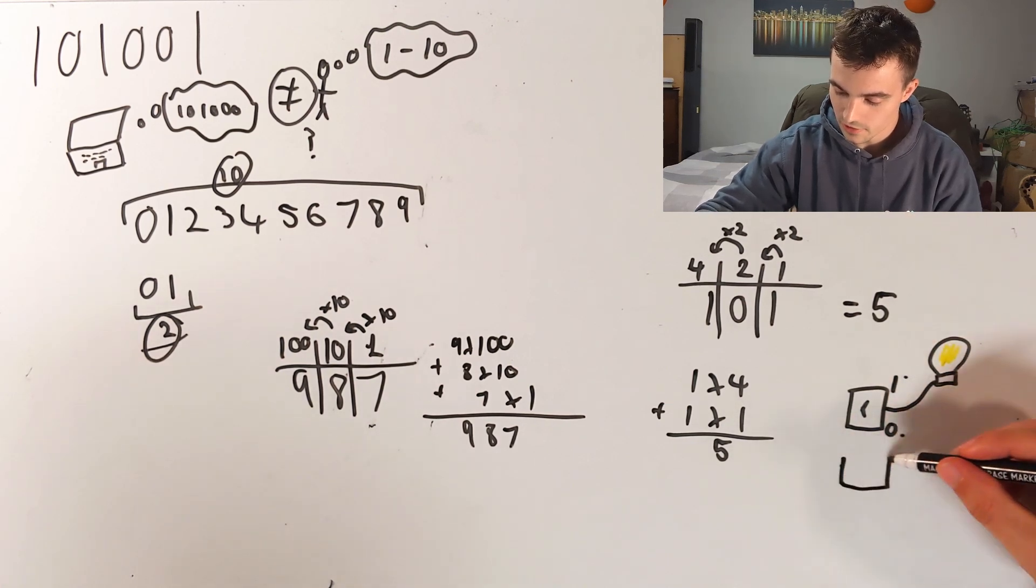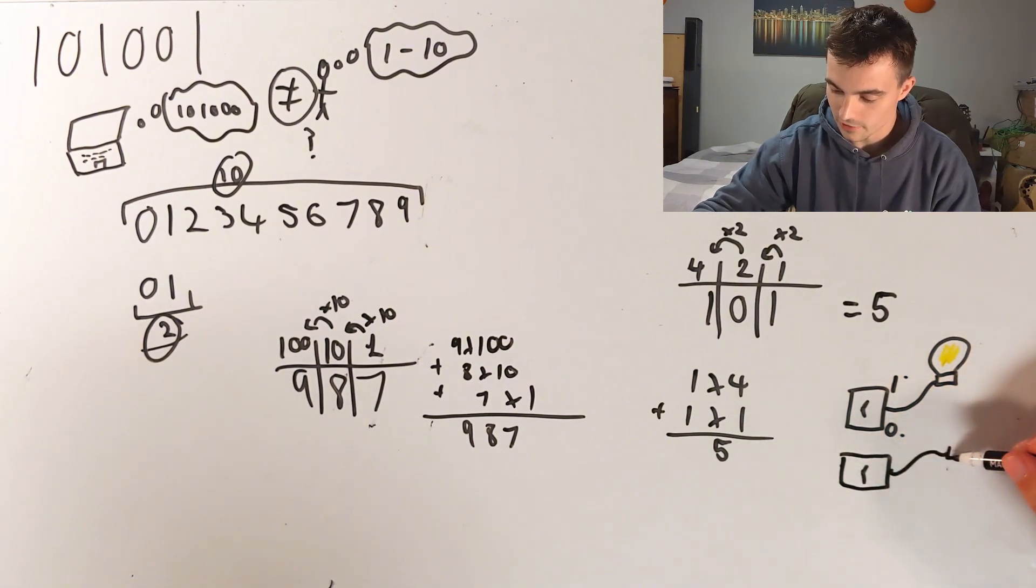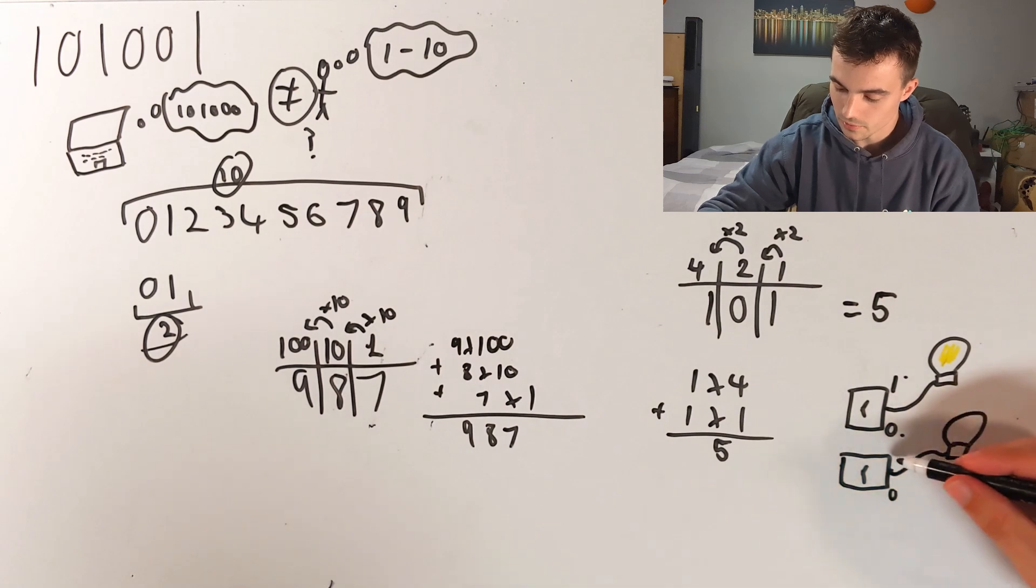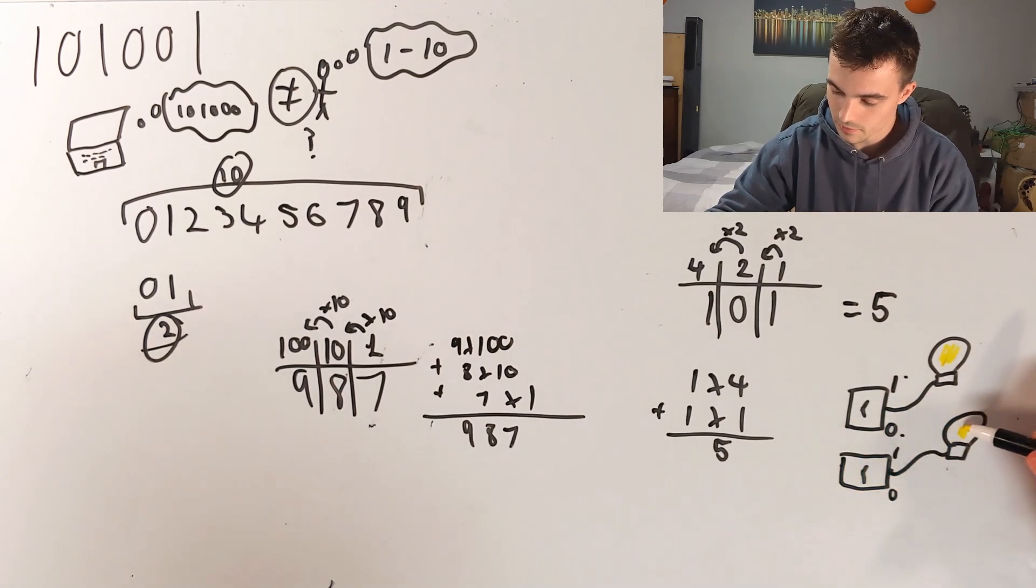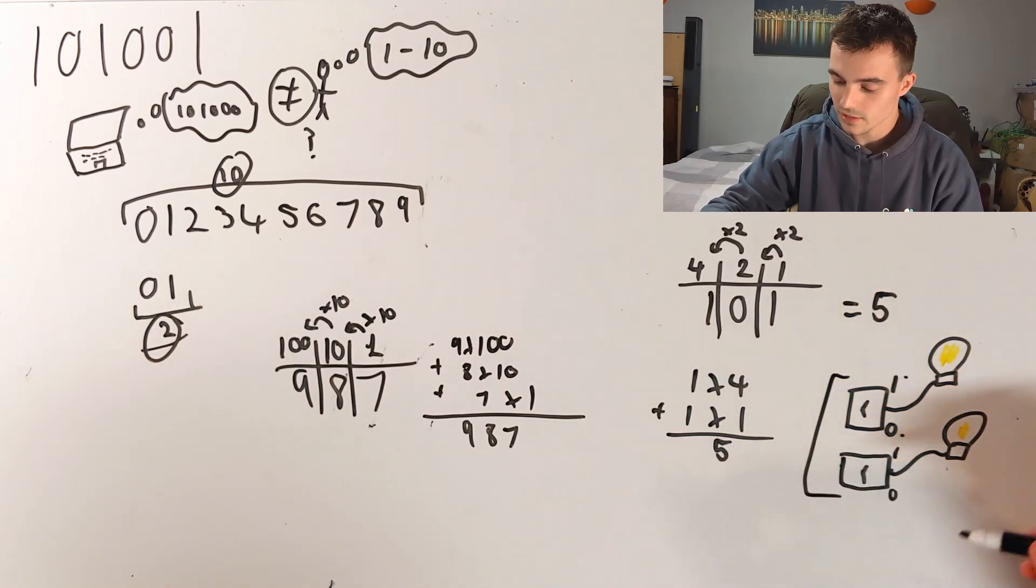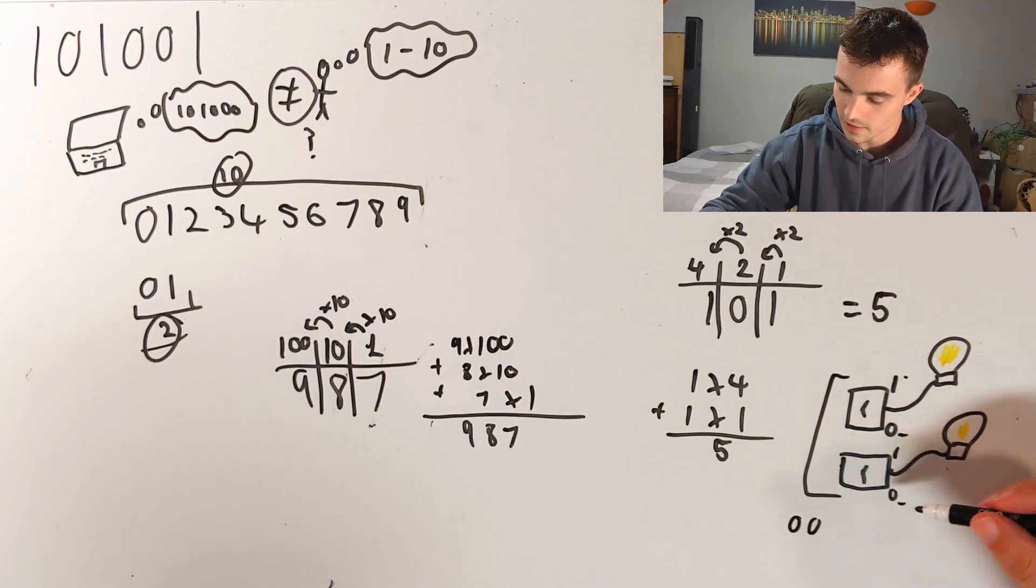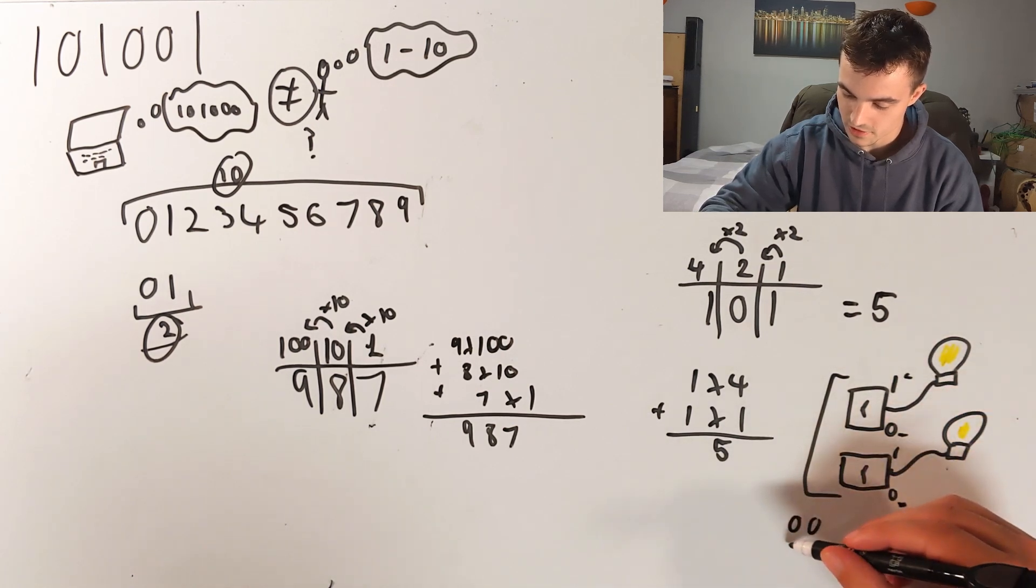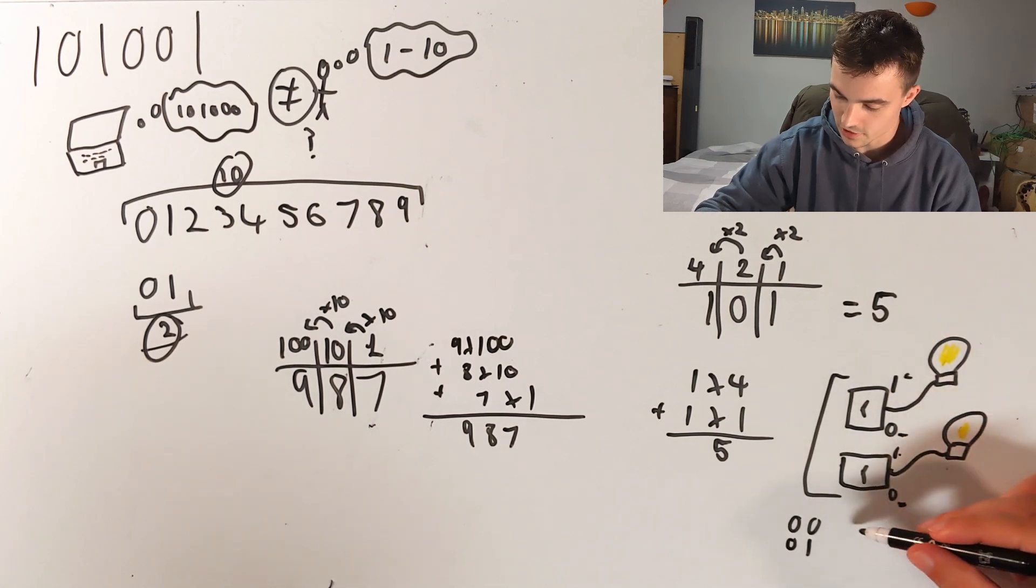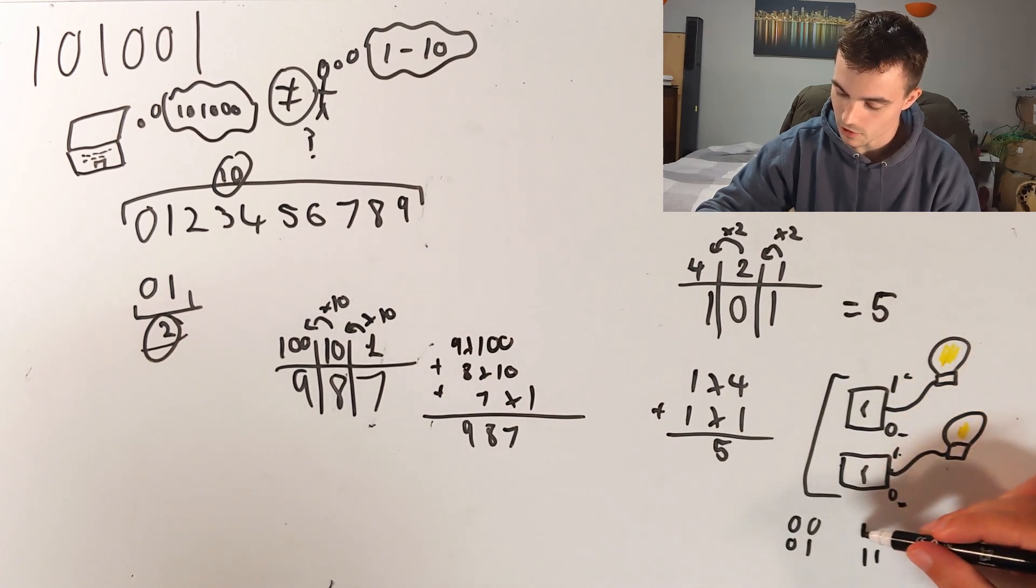If I have another switch and I have another lightbulb, this also can be off or on. If I take the two together, it can either be off and off, which is zero zero. Off and on, which is zero one. It can be on and on, which is one one. Or it can be off and on, which is one zero.